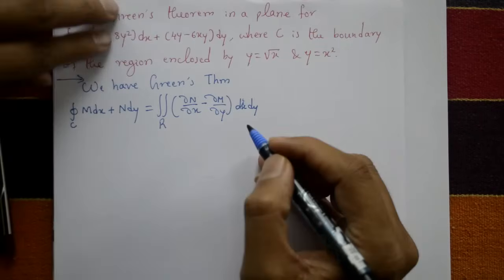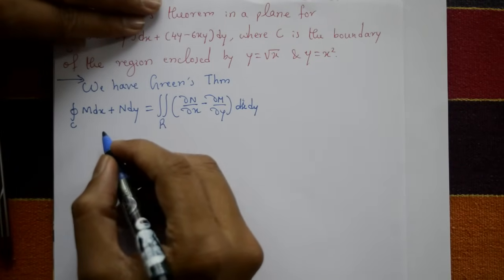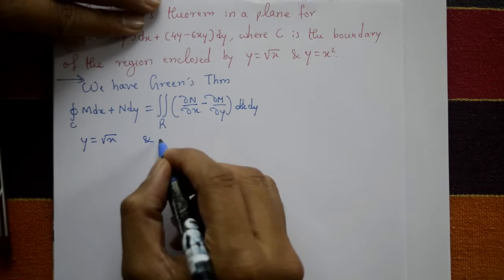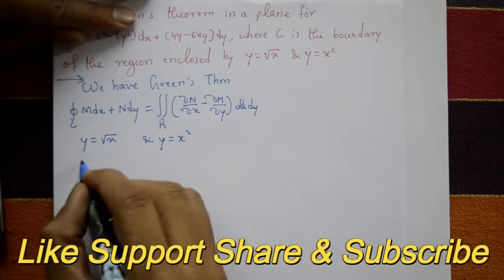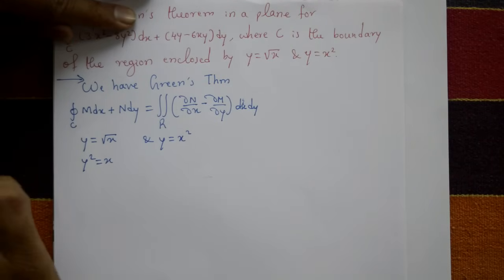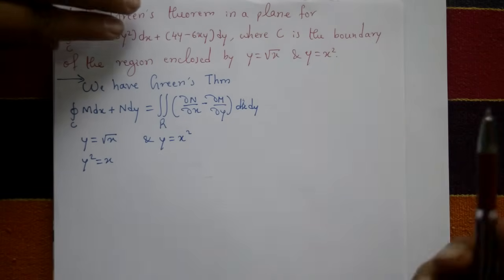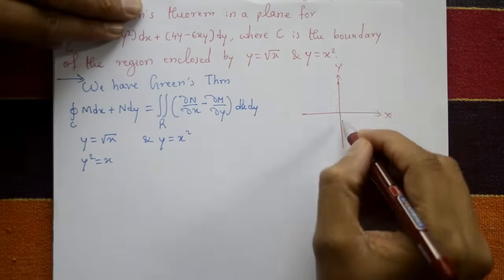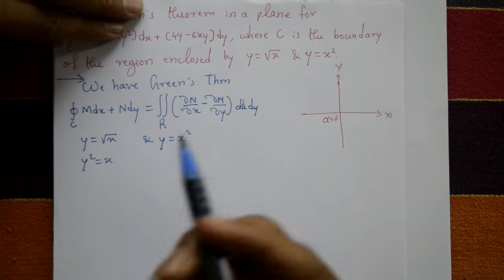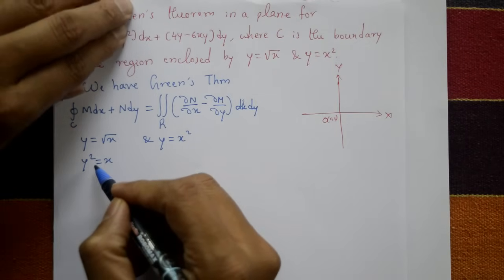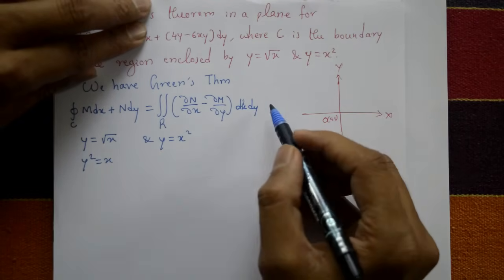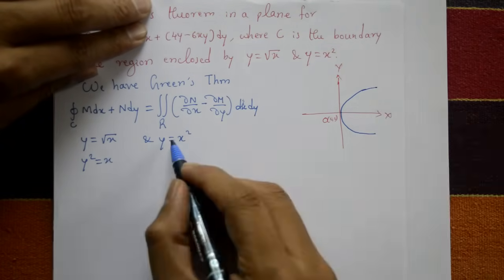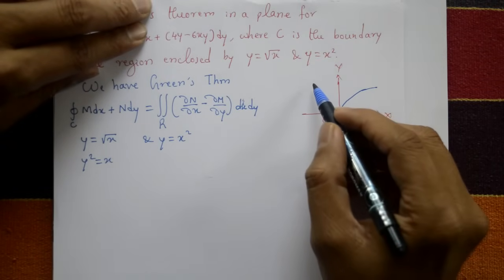The two curves given are y = √x and y = x². The first one, squaring both sides, gives y² = x, which is a parabola symmetric about the x-axis. Now y = x² is symmetric about the y-axis. Let's draw the diagram with x and y axes and the origin at (0,0).